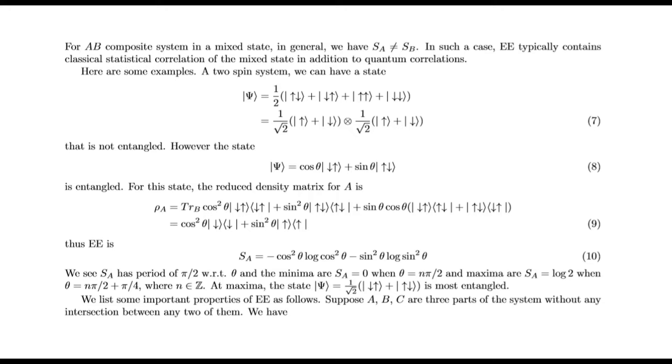Here are some examples. A two-spin system: you can have a state that is not entangled. However, the state |ψ⟩ = cos(θ)|↑↑⟩ + sin(θ)|↓↓⟩ is entangled. For this state, the reduced density matrix for A is shown, and the entanglement entropy is calculated. We see S_A has period π/2. The minima of S_A is 0 when θ is nπ/2, and the maxima of S_A is log 2 when θ is nπ/2 + π/4, where n is integral. The maximum state |ψ⟩ is most entangled.